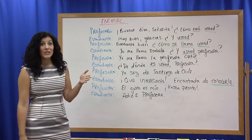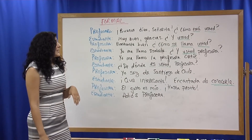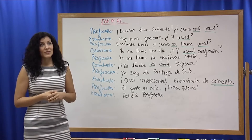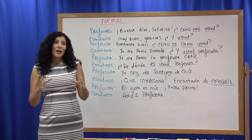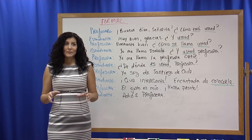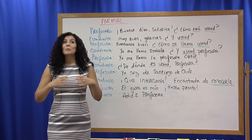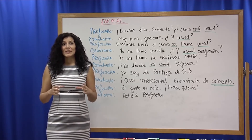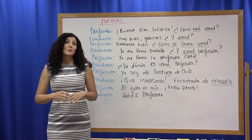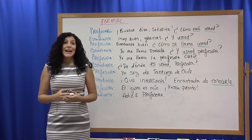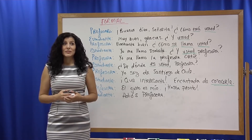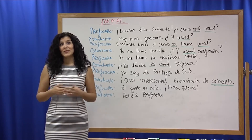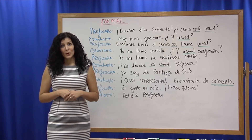In the scenario that you just saw, the person involved was a professor and a student. This is a very common use of the formal. The formal will be used in situations where you are involved with someone who is of a higher rank than you, someone who has authority over you, and also for the elderly. So if you are speaking to your friend's elderly grandparents, for example, you would always use the formal.